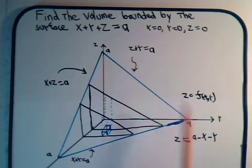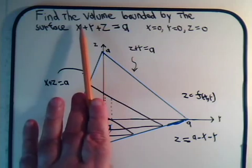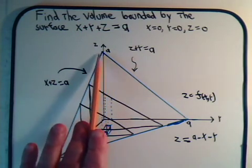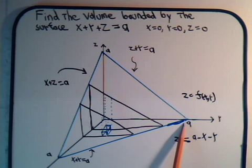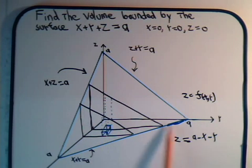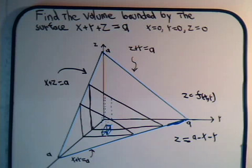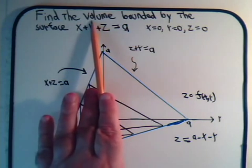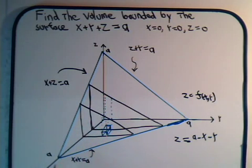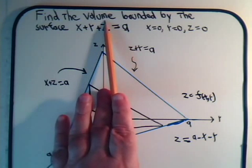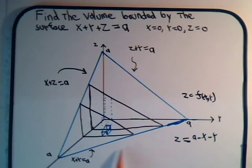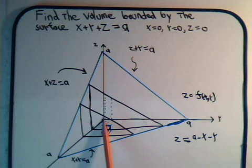When x is zero, we're in the y-z plane and we have y plus z equals a, giving us a straight line. When z is zero, y is a; when y is zero, z is a. When y is zero, we're in the x-z plane: x is a, z is a. When z is zero, we have x plus y equals a in the x-y plane, giving another straight line where y is a.